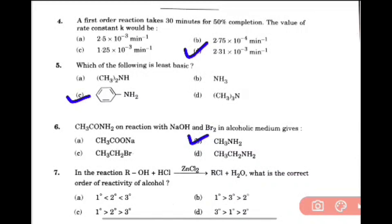Question 7: In the reaction ROH plus HCl in presence of ZnCl2 gives RCl plus H2O. What is the correct order of reactivity? So it will be option A.